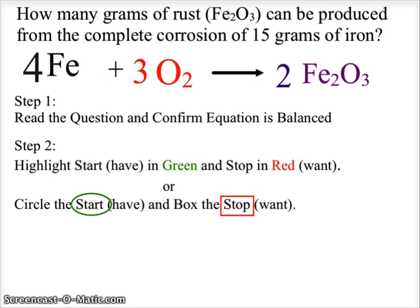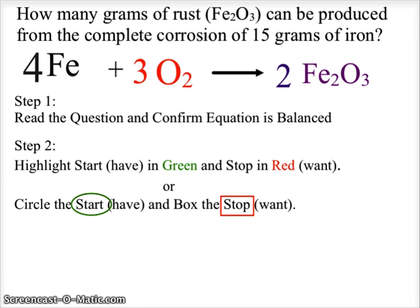Here we have a question: how many grams of rust, Fe₂O₃, can be produced from the complete corrosion of 15 grams of iron? First, we need to read the question and confirm we have a balanced chemical equation. When we have four atoms of iron and three molecules of oxygen, we get two molecules of rust, Fe₂O₃. There are four atoms of iron on both sides and six atoms of oxygen on both sides, so we do have a balanced chemical equation.